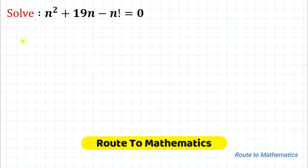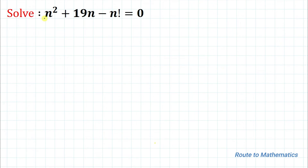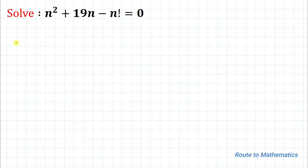Hello everyone, welcome to Root 2 Mathematics. In this video we are going to solve this equation: n² + 19n − n! = 0. We are asked to find the value of n. Before going through the solution, please subscribe to my channel and click the bell icon for more such interesting videos. Without any delay, let's start the solution.